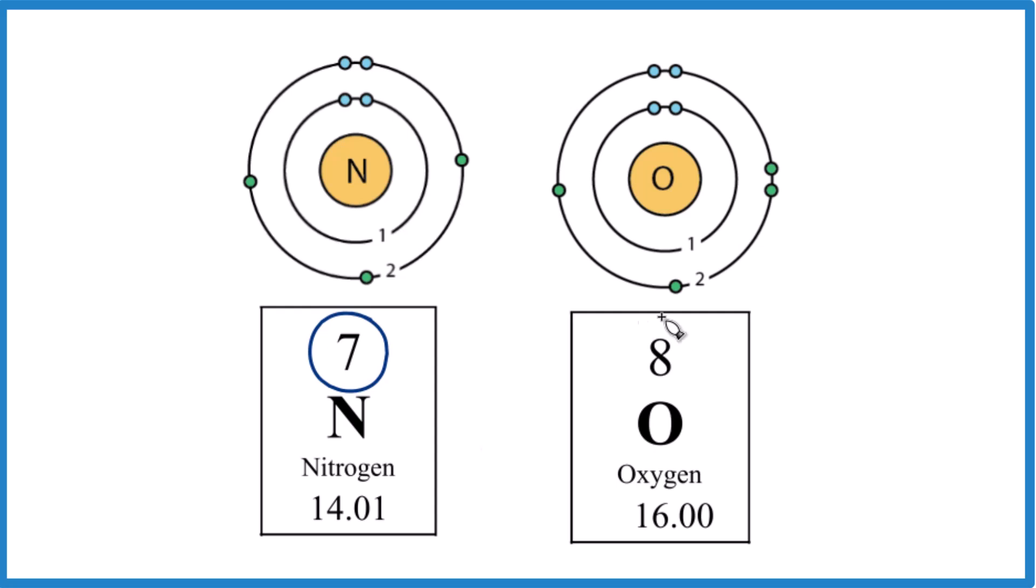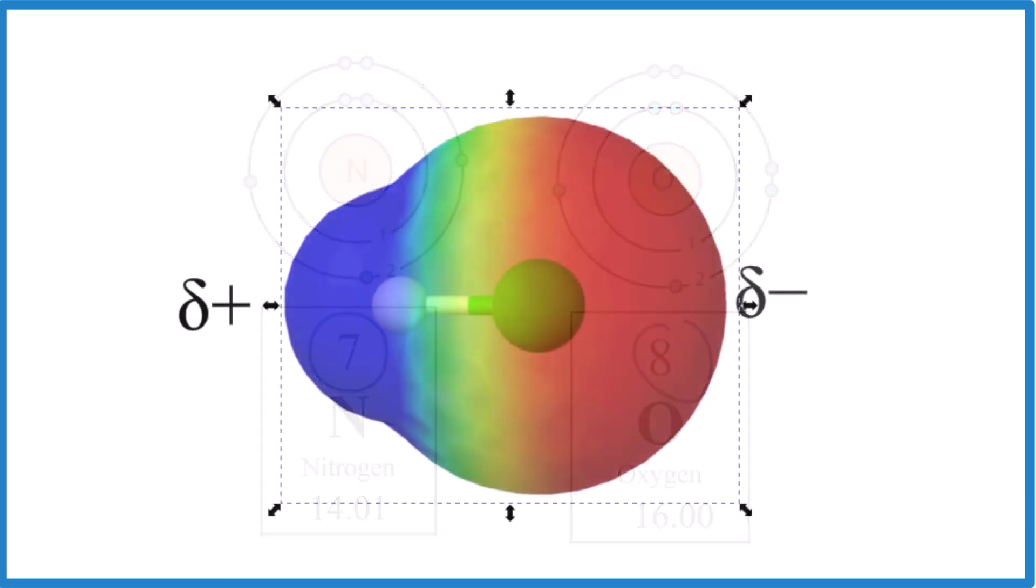If we look at the periodic table, the atomic number, number of protons, oxygen has one more proton. That means it's a little bit more positive in the nucleus. It can pull electrons in a chemical bond towards it more strongly than nitrogen. That means it's more electronegative because it has more positive charge and can pull electrons in a chemical bond towards it.